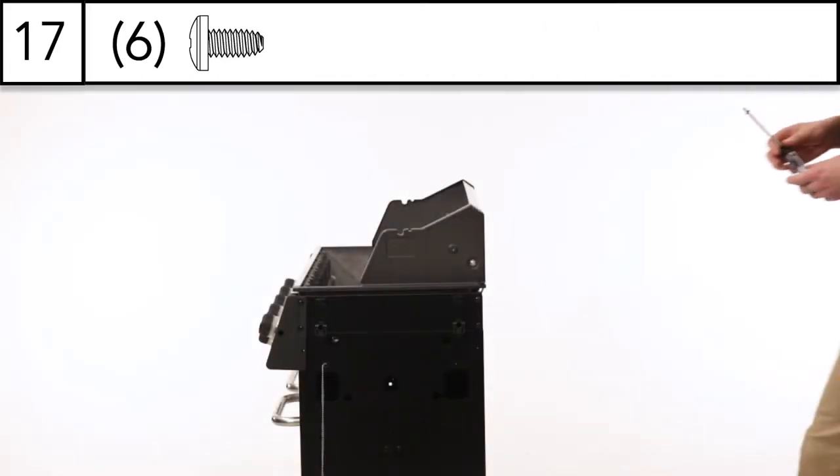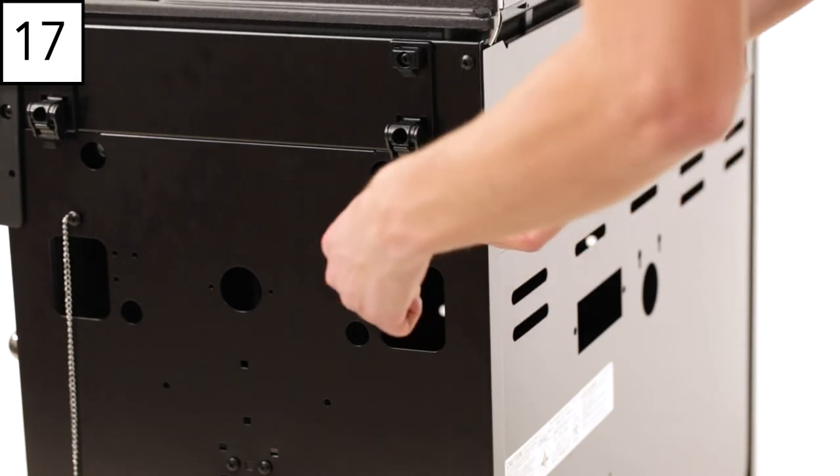Step 17. Install the six remaining screws to secure the cabinet to the cook box.